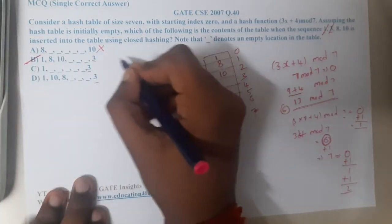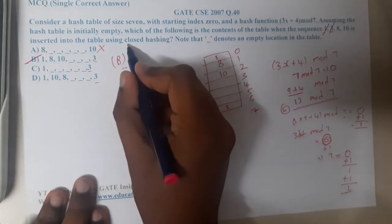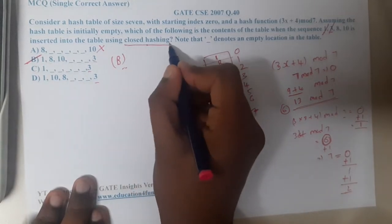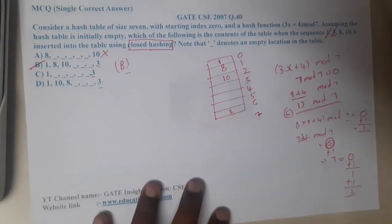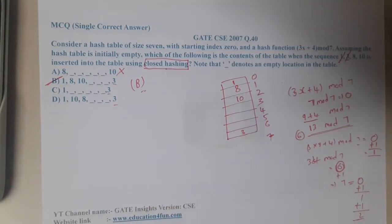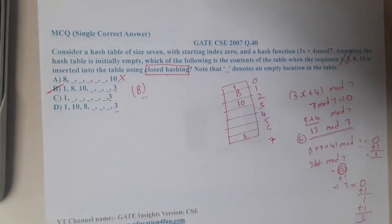Now if you observe, what will be the answer? B will be the answer. Using linear probing we have done it. They mentioned closed hashing—that's my bad. In closed hashing, the popular algorithm is linear probing.